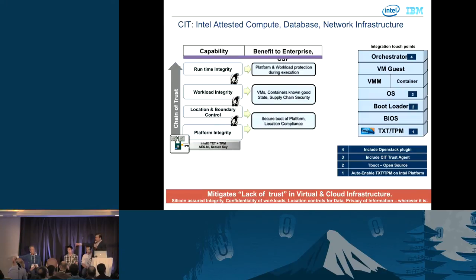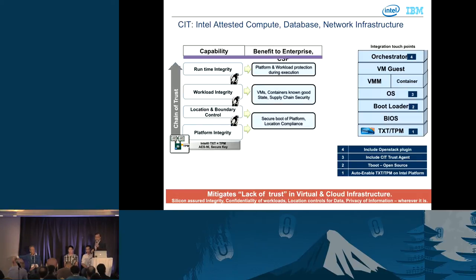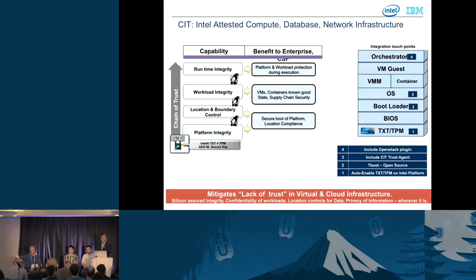In terms of touch points, you need to enable TXT and TPM, which is on the hardware by default. The second is the boot loader — an open source T-boot environment. Third is within the OS, include the cloud integrity technology trust agent, which comes free and by default in most cases. Fourth is the plugin in the OpenStack Nova scheduler or associated Cinder for storage or Neutron for networking. With these four touch points, you have the whole chain of trust from platform integrity through workload integrity, and we're working on runtime integrity now.